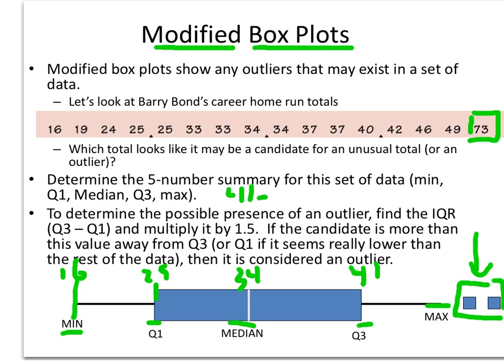And so to determine whether 73 is an outlier or not remember I got to go Q3 minus Q1. So 41 minus 25 which is 16. I multiply that by 1.5 and that comes out to be 24.